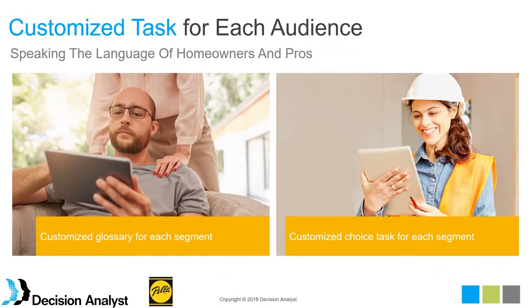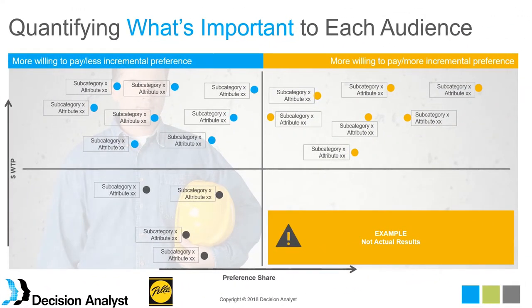We had a customized survey design for each segment — homeowners and pros — and a customized glossary for each segment geared in the appropriate language. So there were some tweaks for homeowners versus the installer contractors and home builders. How did we use the data that came out of the conjoint exercise? This is an example of how we quantify what's important to each segment — an analysis to help explain what homeowners were willing to pay more for versus incremental preference.